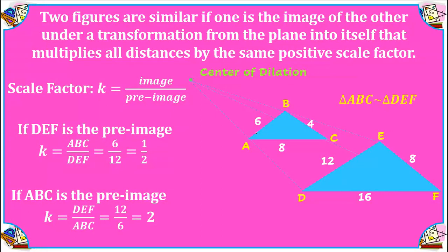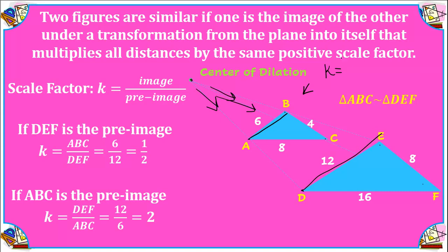Let's take a look at our center of dilation. Here we have triangle ABC and here is our center of dilation. If we are enlarging this shape, you can see that our new shape DEF has all its points pushed away from the center of dilation. To calculate the scale factor, if ABC is our pre-image and DEF is our image, we take a corresponding pair of sides such as 6 and 12.